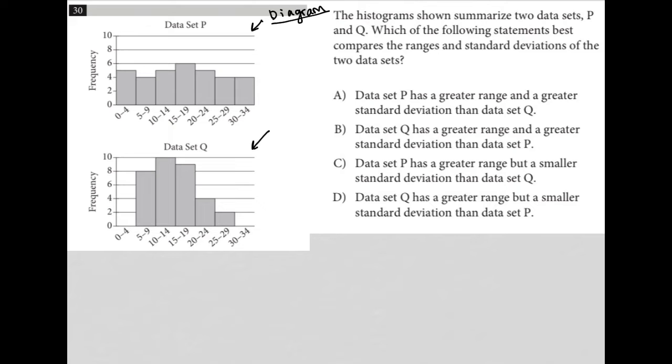Let's see what they're asking us to find here. The question says the histograms shown summarize two data sets P and Q. Which of the following statements best compares the ranges and standard deviations of the two data sets. I'm going to pay attention to what I can see about these two things before I look at the answer choices.